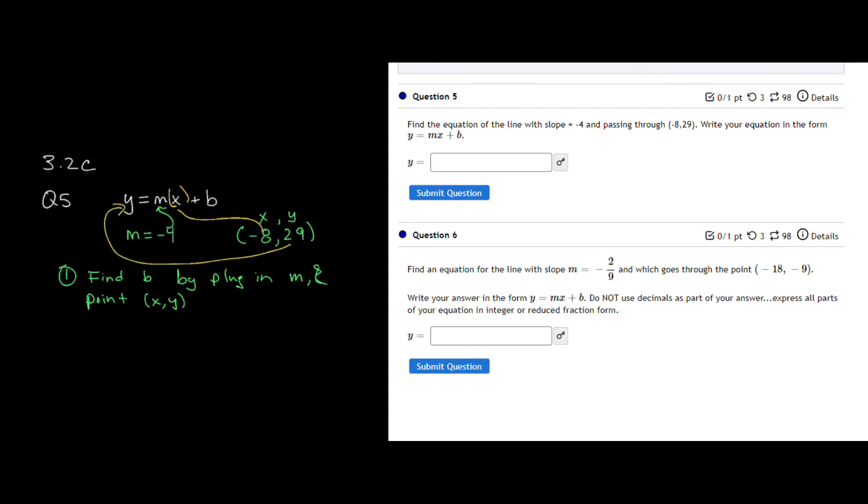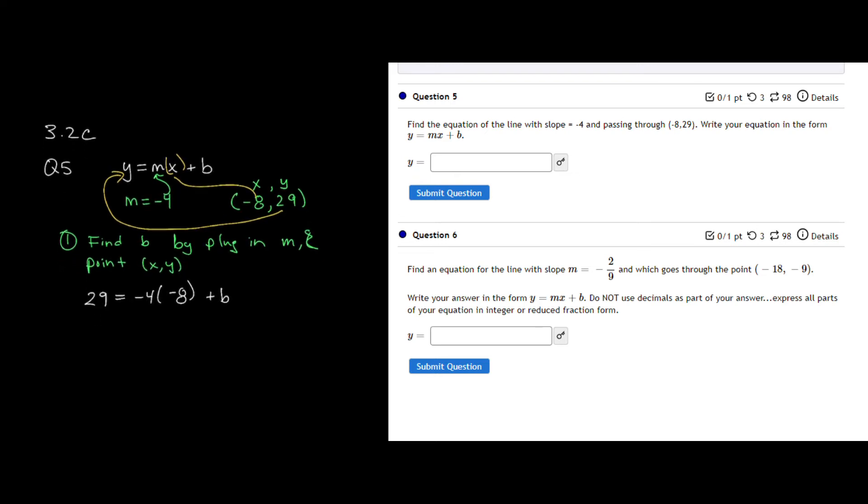So when I go through and plug that in, I have 29 is equal to negative 4 times negative 8 plus b. And again, we're solving for b. So the first thing we do is we multiply negative 4 times 8. And that is a positive 32 plus b. I subtract 32 from both sides. And I solve that b is equal to negative 3.